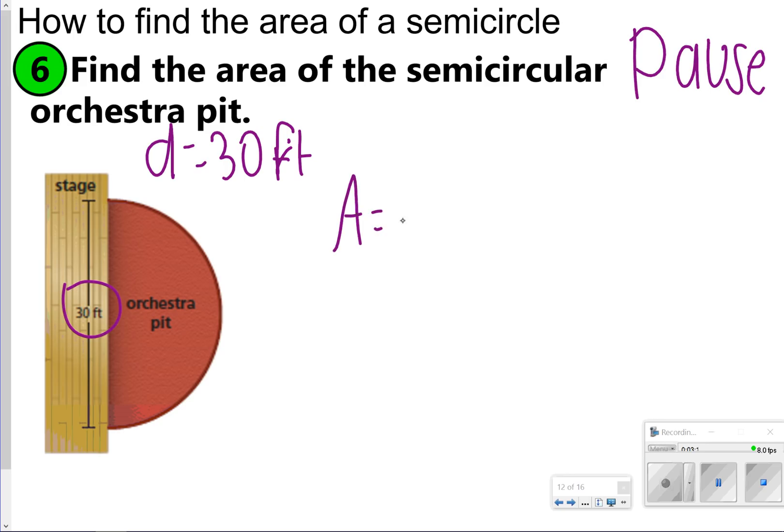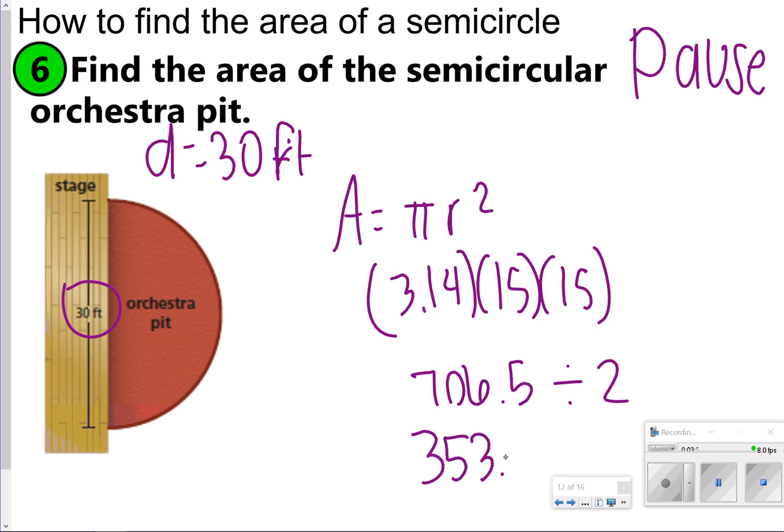The very first thing you should have done was use your same formula, pi times radius times radius, and making sure that you use 15 as your radius. When you do pi times 15 times 15, you're going to get 706.5. But since this is a semicircle, we are going to divide it by 2, and so we'll get 353.25 feet squared.